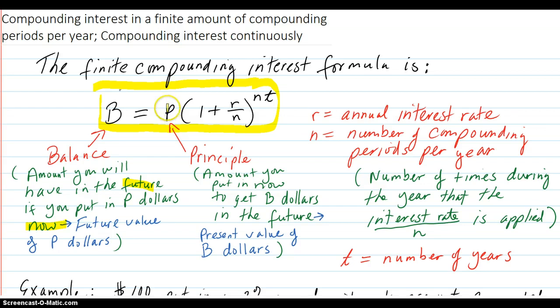The principal. That's the amount you put in now to get B dollars in the future. Also called the present value of B dollars.